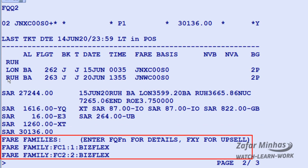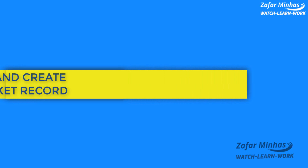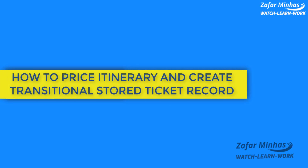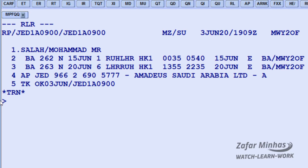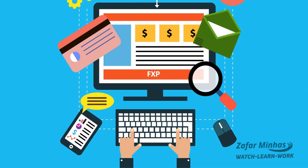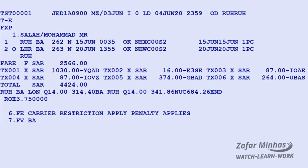To price an itinerary and create a Transaction Store Ticket record: if the PNR or booked itinerary already contains name elements, you can use the FXP transaction. In this case, it will create a TST — Transaction Store Ticket record — containing information needed to issue the ticket at a later stage.